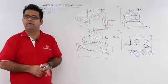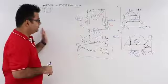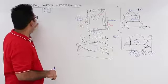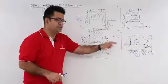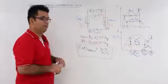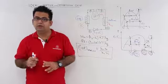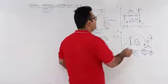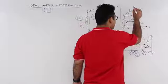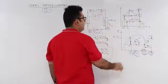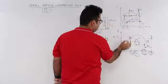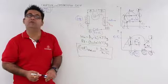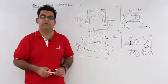This is all that we needed to cover in this video. It was aimed at giving you an introduction to the ideal vapour compression cycle, the processes linked to it, and how to find the COP. In the next video we will look at the actual vapour compression cycle, where there will be deviations in the isentropic compression and expansion.